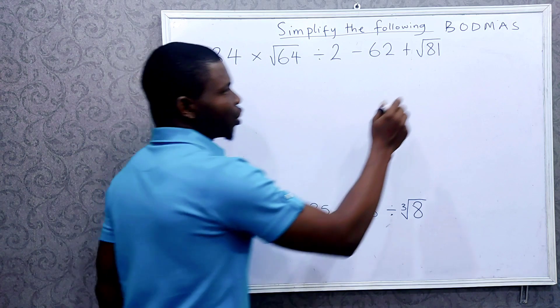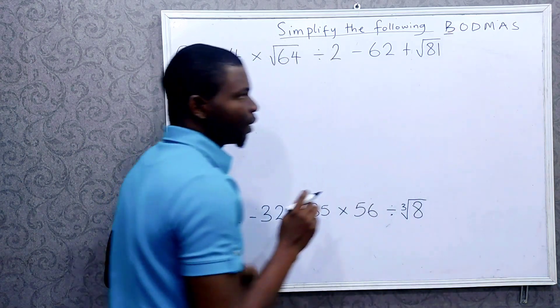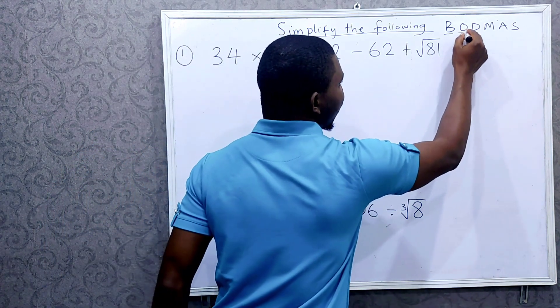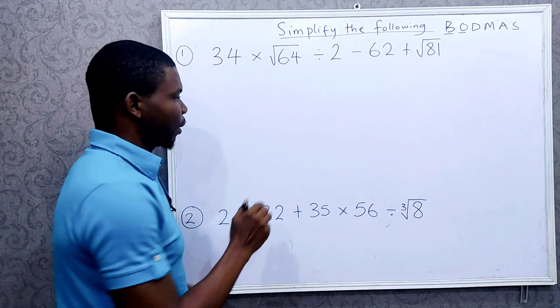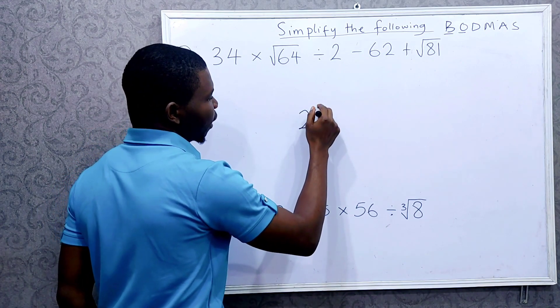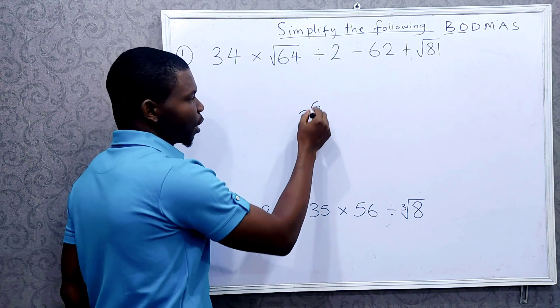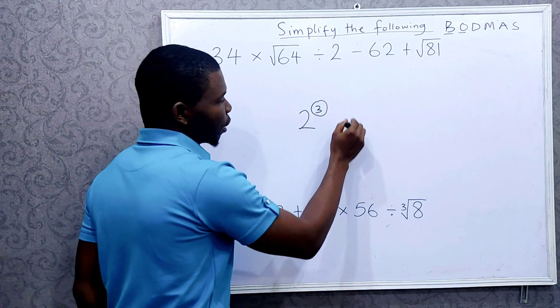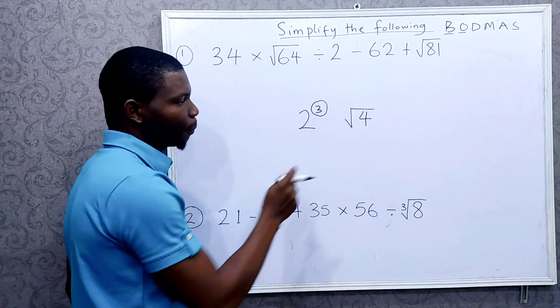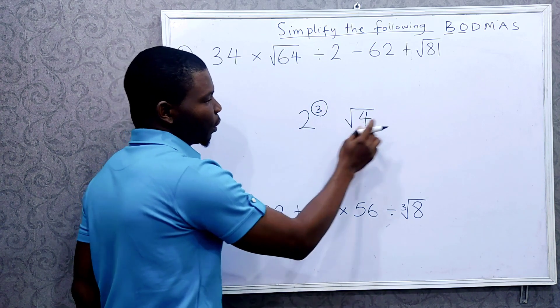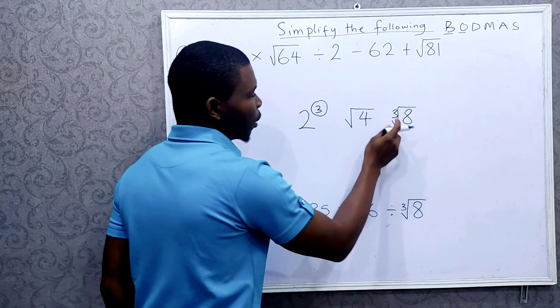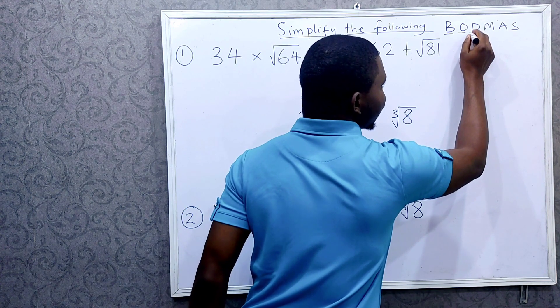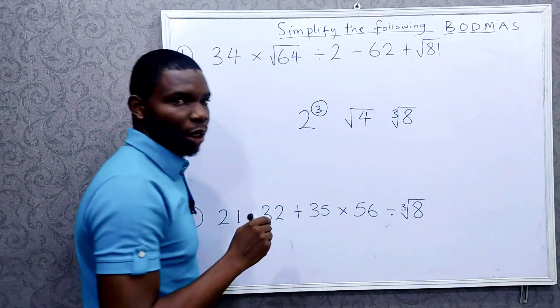Now BODMAS tells you to do the bracket first, so anything inside the bracket you deal with it before moving to the order or exponent. By order or exponents I mean something like 2 raised to power 2 raised to power 3. This power 3 is the order or exponent, or you can say maybe square root of 4, this square root is the order or exponent, or cube root of 8, this cube root is the order or exponent.